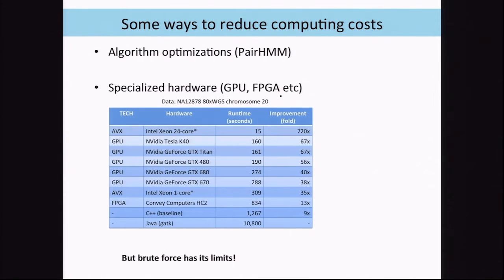We looked into some ways to reduce the cost of this. We did some very cool, fancy hardware optimization on Intel vectorized machines and on the GPU. You can get several-fold improvement, and that enabled us to do around 20,000 samples on one computer. But that doesn't scale to 100,000 or a million samples.